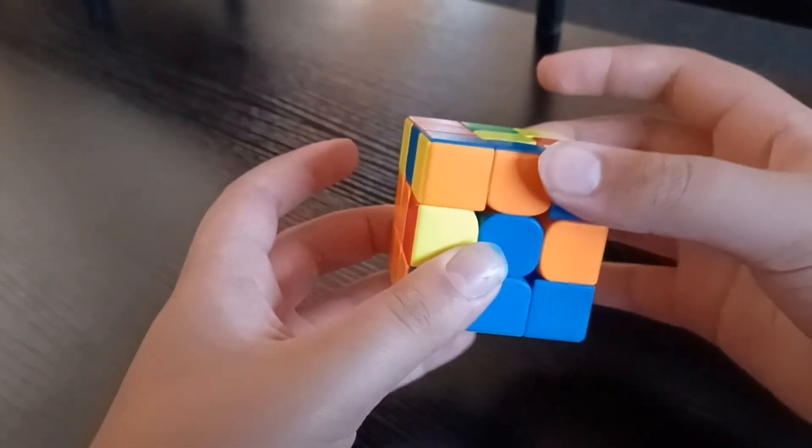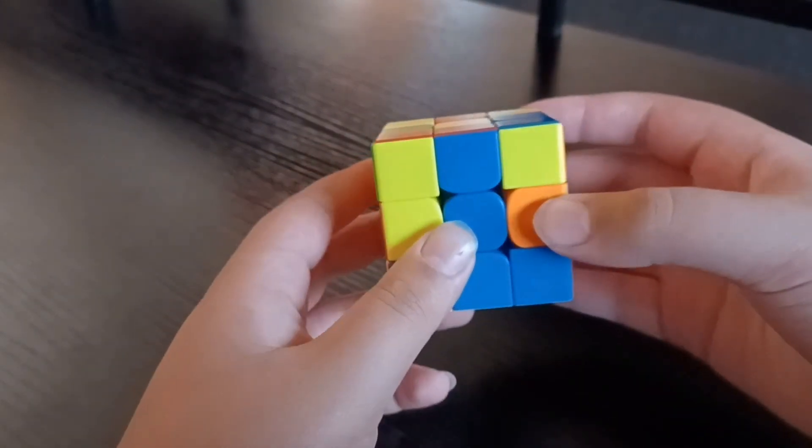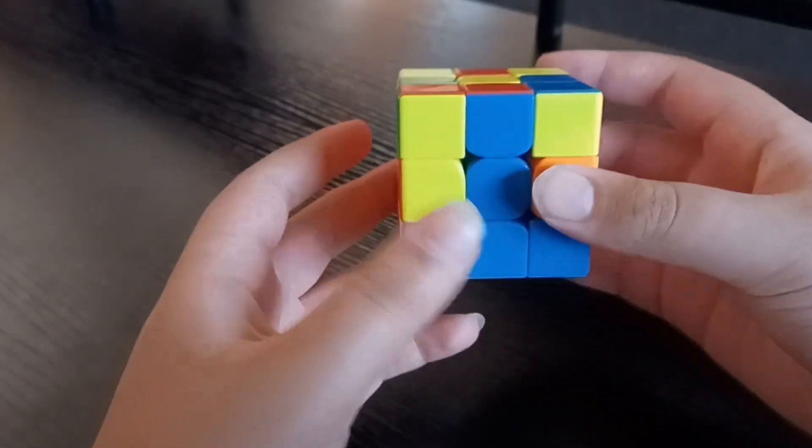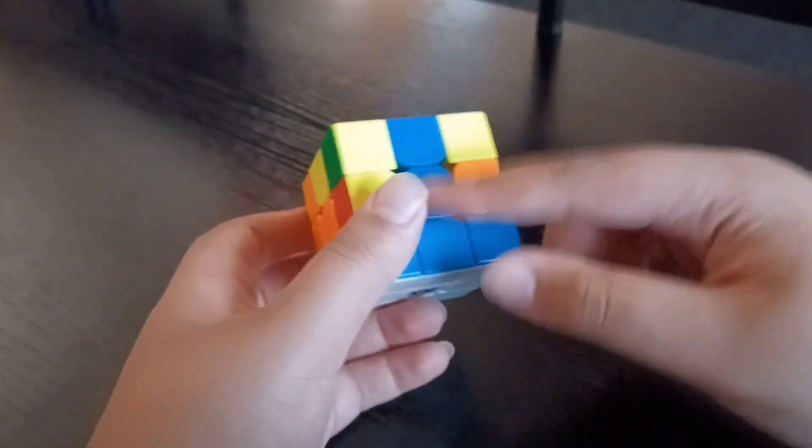So when we find it we're going to put it on top to see if it matches with the right side or the left. So since it matches with the left center, this is blue blue.